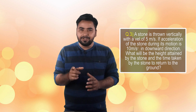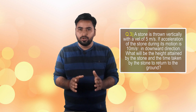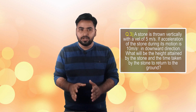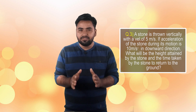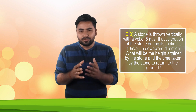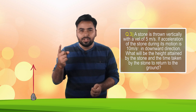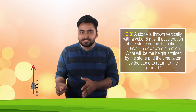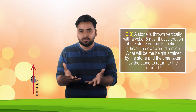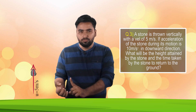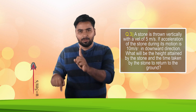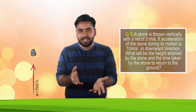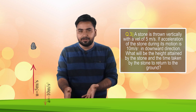A stone is thrown upward with a velocity of 5 meters per second. If the acceleration of the stone during its motion is 10 meters per second squared in the downward direction, what will be the height attained by the stone and how much time will it take to return to the ground? The initial velocity u is 5 meters per second, direction of motion is up, and acceleration is in the opposite direction so a equals minus 10.